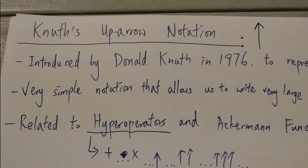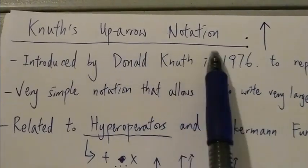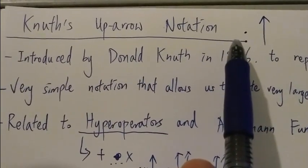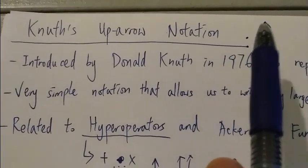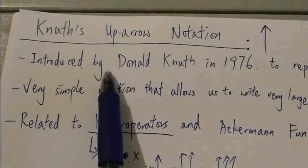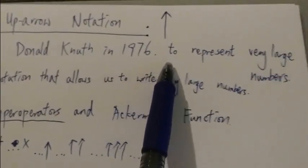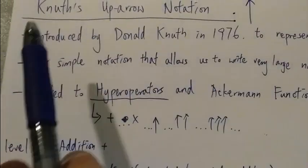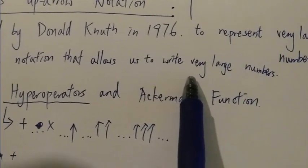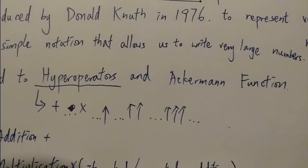Hi everyone. Today I want to talk about Knuth's up-arrow notation, which is a quite famous notation in the big numbers or Googleology community. It was first introduced by computer scientist Donald Knuth in 1976 to represent very large numbers.